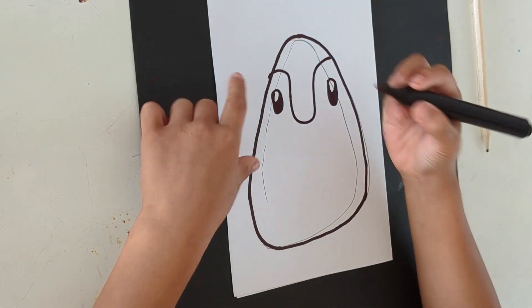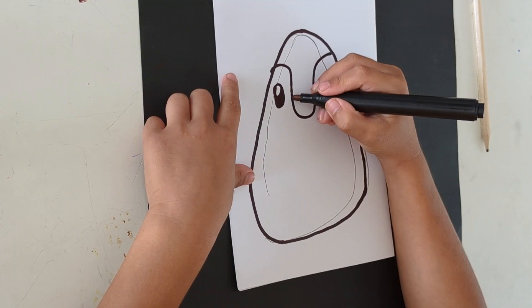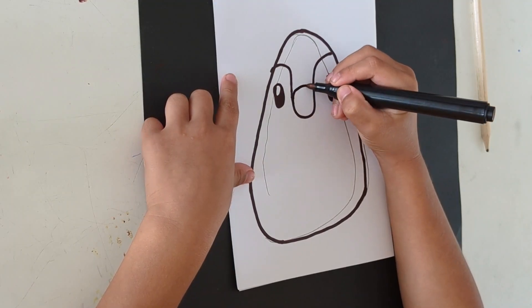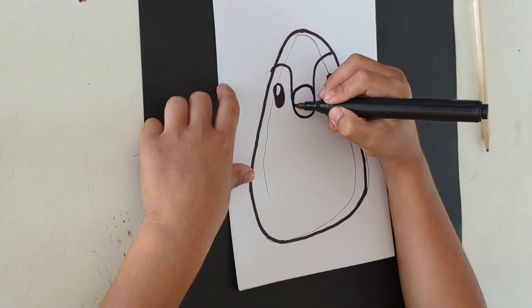Okay, now let's draw the beak. A little upside down U and then a smile in the middle.